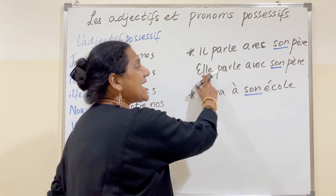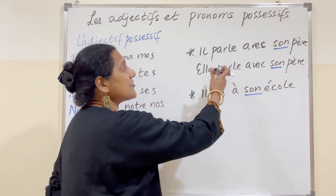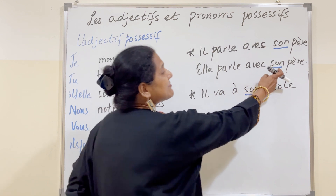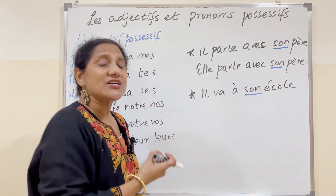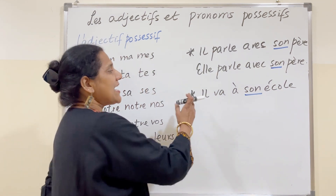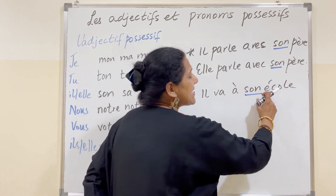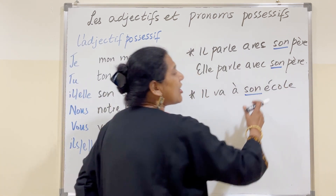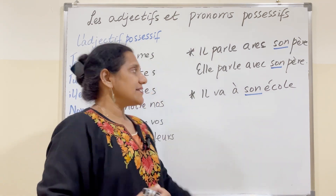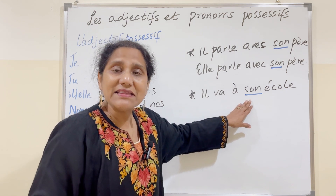But when we say elle parle avec son père, whether it's his father or her father, it's the same son père, because in French it depends on the object possessed. Another thing to remember: il va à son école. Even if the noun begins with a vowel and it's feminine, it's going to take son. You cannot write ma, ta, or sa.